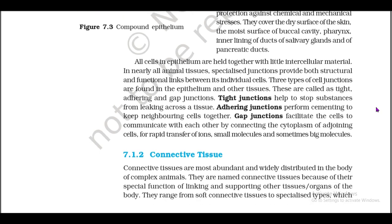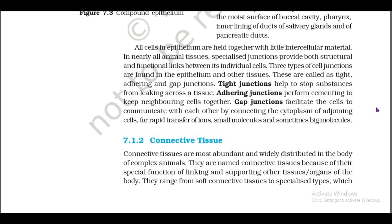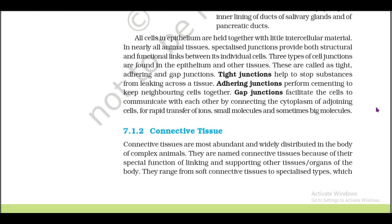All cells in epithelium are held together with little intercellular material. In nearly all animal tissues, specialized junctions provide both structural and functional links between individual cells. Three types of cell junctions are found in the epithelium and other tissues: tight junctions, adhering junctions, and gap junctions. Tight junctions help to stop substances from leaking across the tissue. Adhering junctions perform cementing to keep neighboring cells together. Gap junctions facilitate cells to communicate by connecting the cytoplasm of adjoining cells for rapid transfer of ions, small molecules, and sometimes large molecules.